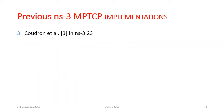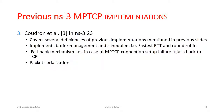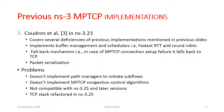The third implementation is by Matthew Gudron and others in NS3.23. It covers several deficiencies of previous implementations, implementing buffer management schedulers, fast RTT round robin, and packet serialization. However, it does not implement path managers — a key function of MPTCP — and does not implement congestion control algorithms. It is also not compatible with NS3.25 and later versions because the TCP stack was refactored in NS3.25.